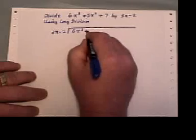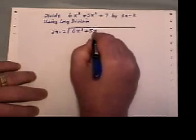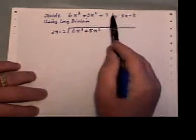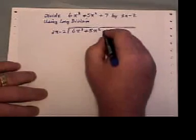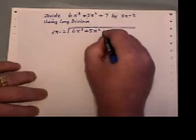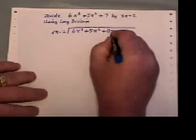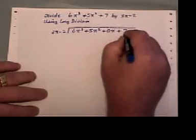6x cubed plus 5x squared. Now, at this time, you'll notice that there's no term that has the letter x in it by itself and not squared. So I'm going to put it in by putting a 0x, and then I'm going to put in the plus 7.